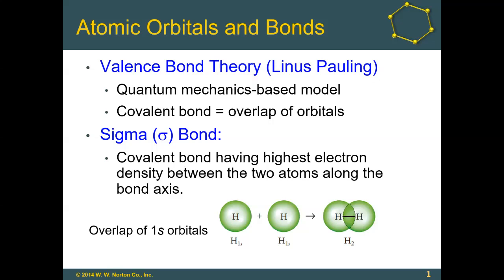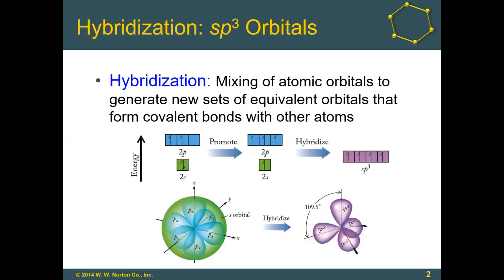However, when more than one atom bonds to a central atom, different bond angles occur. Hybridization is the reason we observe the shapes predicted by VSEPR. Hybridization is the mixing of atomic orbitals—taking different orbitals from the same atom and creating new sets of equivalent energy orbitals that can form covalent bonds with other atoms.